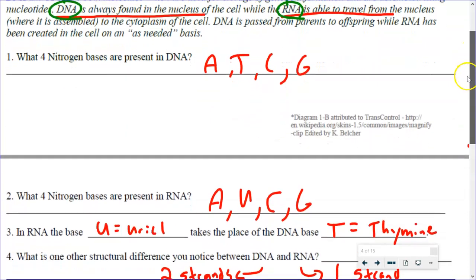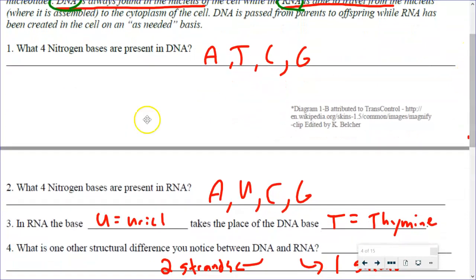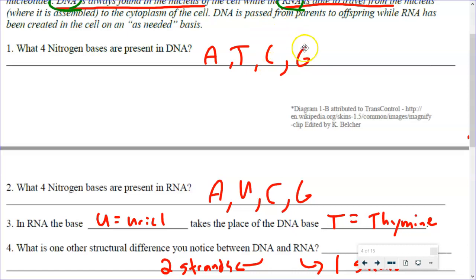So let's look at the questions. Question one, at the bottom of the first page: the four bases in DNA — we learned this before — adenine, thymine, cytosine, guanine, or you can go A, T, C, and G for short.